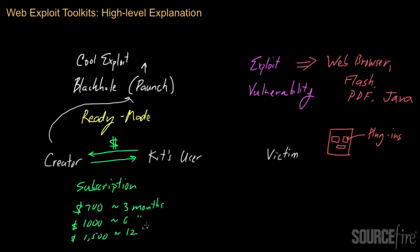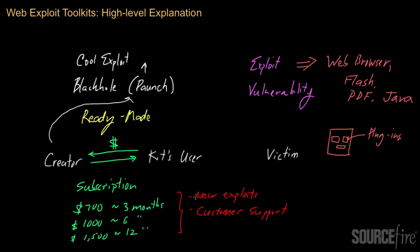If the kit's user doesn't have a server, for an additional fee, Paunch or one of the other exploit kit writers can provide a server on which to host the exploit kit. As part of the subscription, you might get access to new exploits — if a new exploit comes out for a vulnerability, subscribers may be given access to it. Somewhat surprisingly, if you buy one of these toolkits, you will typically be given some degree of customer support, as you are a customer of the toolkit.